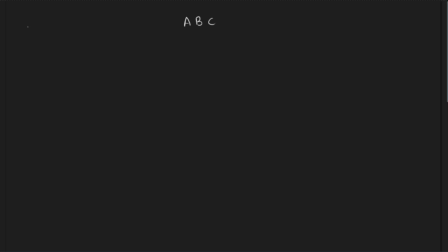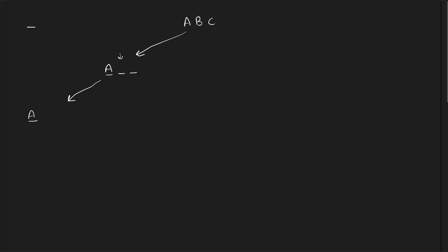Assume you are at the first place and you decide to fix A. You have one path where A is fixed and the remaining two places are empty. At the second position you decide to fix B, so you have A and B with one space empty. Since there are no other choices, you can only go to ABC — this is the only permutation from this path.